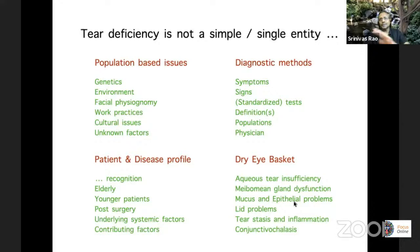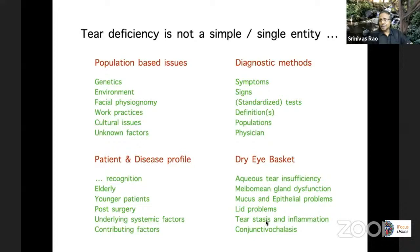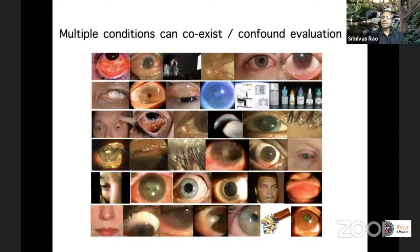When you look at dry eye itself, I like to think of it as a basket. You could have an aqueous tear problem, a meibomian gland problem affecting lipid in the tear film, problems with the mucus component, or with the epithelium itself — meaning you have tears but they're not being held onto the surface because the epithelium is unhealthy. You could have lid problems: the lid not blinking at all causing evaporation, blinking poorly not clearing the surface, or blinking so much it causes trauma. Lack of tears is a problem, but tear stasis is also a problem. You can have inflammation, and conjunctivochalasis in an elderly eye interferes with the proper flow of tears.